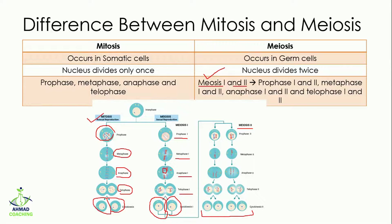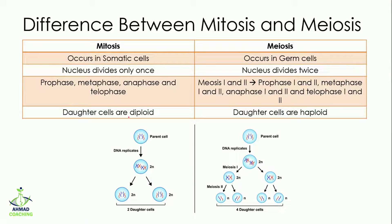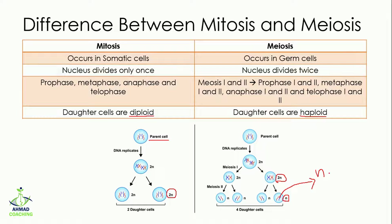Remember that meiosis 2 is just like mitosis, but meiosis 1 is different because of crossing over. In mitosis, the daughter cells are diploid, meaning 2n — the chromosome number equals that of the parent cell. In meiosis, the daughter cells are haploid, meaning n — the chromosome number is half that of the parent. This haploid condition is important because during fertilization, n from the egg and n from the sperm combine to restore the 2n number.